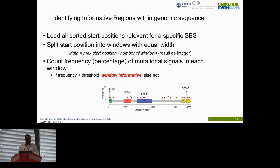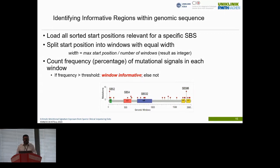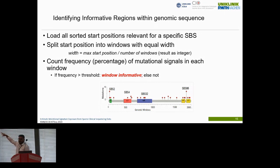To identify informative regions based on genomic sequences, we load all sorted start positions based on specific SBS types — the mutational signature type — and split the start positions into windows of equal width. We count the frequency of mutational signatures in each window, and if the frequency is greater than the threshold frequency we select them; otherwise we mark them as non-informative windows. As you can see in this picture, informative window regions have been identified, and the red dots not inside informative windows are mutations present in the non-informative zone, which we discard.